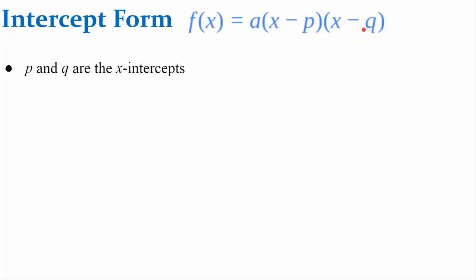Noting this is very much like your vertex form in that it's x subtract the value. So if this were x minus 2, p would have a value of 2. If it were x plus 2, p would have a value of negative 2. Note that a here is the same value of a whether the function is written in vertex form or in standard form.